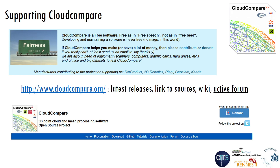Cloud Compare is free software — but free as in free speech, not as in free beer. That means that developing and maintaining the software is never free. So if you find Cloud Compare really useful for your work, first don't forget to cite it, but also consider contributing or donating to help the development of the project. You can find a lot of information on the dedicated website: the latest releases, a link to the source code, a very detailed wiki, and an active forum where you'll find a lot of information.